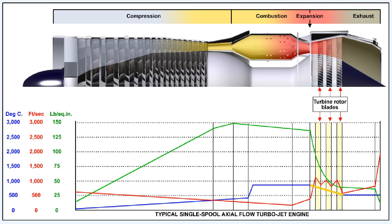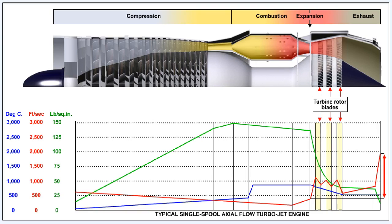The energy available in the gas stream flowing through the turbine takes several forms: heat energy, potential or pressure energy, and kinetic energy from the velocity of the gas stream. The conversion of all these forms into mechanical energy means their values will be reduced as the gas stream passes through the turbine. Nevertheless, the velocity of the gas in the combustion chamber is lower than the eventual velocity of the gas when it reaches the exhaust unit.